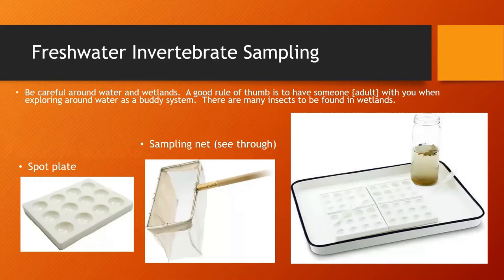For freshwater invertebrate sampling, there are some tools that can help you take good pictures. Spot plates are really good for larvae — mosquito larvae, dragonfly larvae, mayfly larvae. Sampling nets are what you use to scoop things up, but you can also just use a jar. A white tray is best if you want to take pictures — just scoop with a jar, pour it out, and see what you got. Be careful near water, especially this time of year — it can be quite cold and there's still some ice around the rivers.